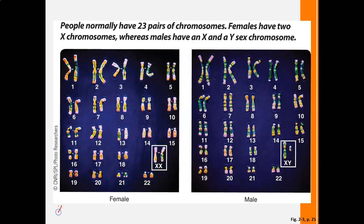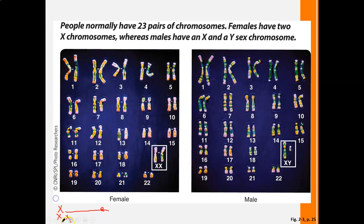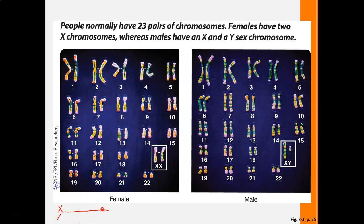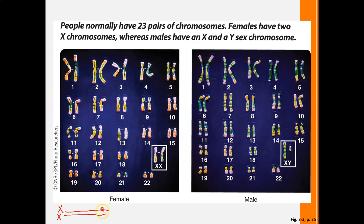An X chromosome carries a significant amount of information. When a female has two X chromosomes and one X carries a gene for color blindness, the second X — received from the sperm — carries the same amount of information and can quiet down or suppress that gene, so the female will not be color blind. In a male, you have the X from the egg which may carry the color blindness gene, but the Y chromosome carries significantly less information and there is no gene to quiet down the color blindness gene.